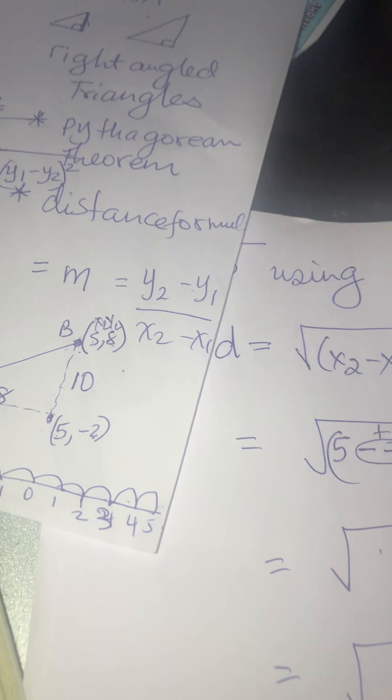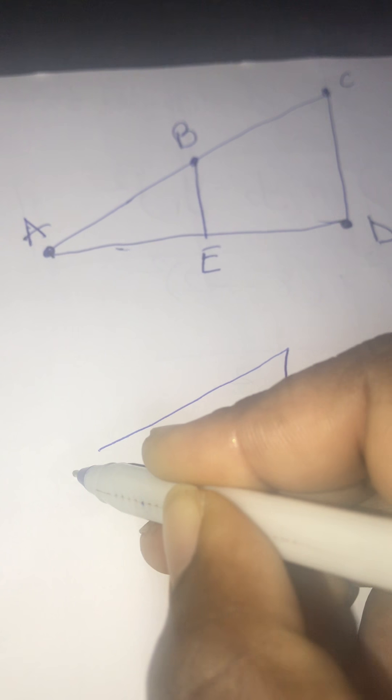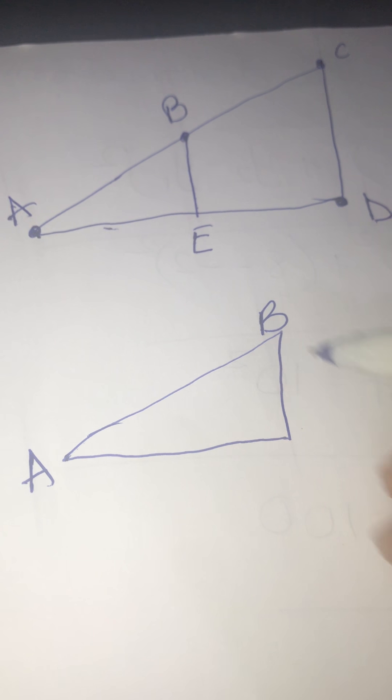Now let's get into the lesson. If two triangles are on the same line, they are similar because they have the same slope. If I have a line with points A, B, and C, I draw two triangles and label the additional vertices D and E. So I have triangle ABE and triangle ACD.